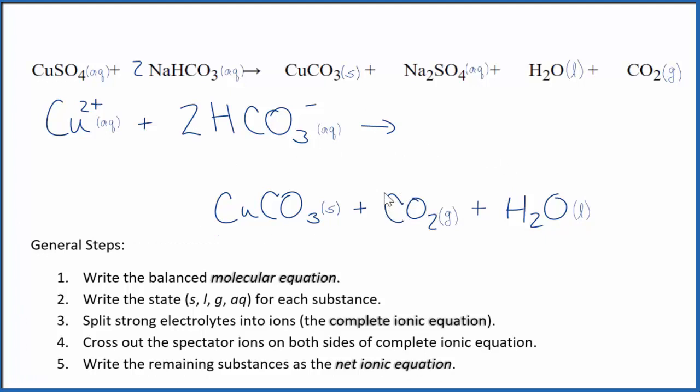So this is the net ionic equation. You'll note that the copper 2 carbonate, because it's a solid, we didn't split it apart into ions. That's our precipitate, so we keep that together. We also don't split apart gases or liquids when we do net ionic equations.